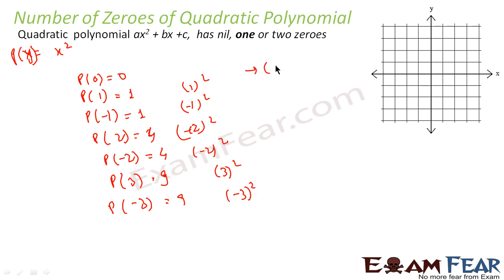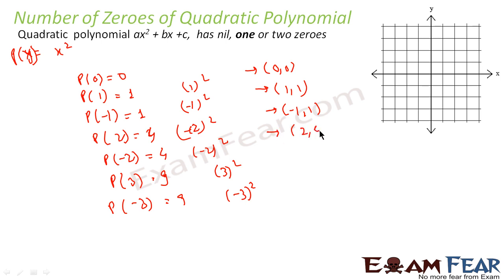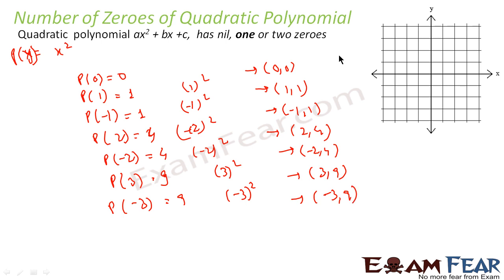So the coordinate points are: (0, 0), (1, 1), (-1, 1), (2, 4), (-2, 4), (3, 9), and (-3, 9).